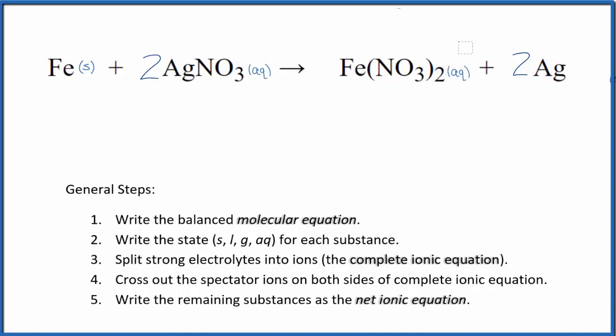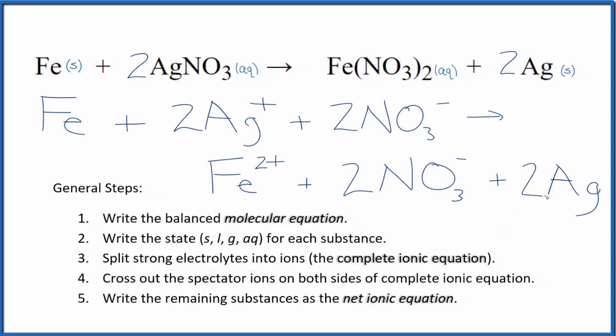This is a single displacement reaction, single replacement reaction, where the iron replaces the silver. So we have our states. Now we can split our strong electrolytes into ions for the complete ionic equation. That looks like this. So this is the complete ionic equation for Fe plus AgNO3.